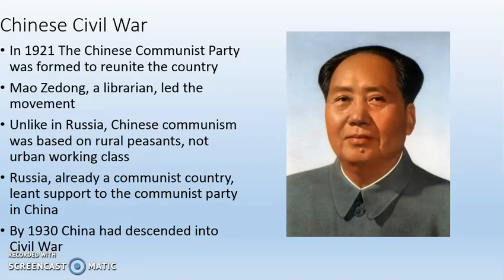Mao Zedong, originally a librarian, led the Communist Party movement in China. Unlike in Russia, where communism formed around the working class — Karl Marx's idea that revolution would come from the working class as a result of poor working conditions — Mao Zedong saw the poor conditions of rural peasant farmers, and this is where he rooted his version of Chinese communism: in the rural peasants, not the urban working class. This is very important.